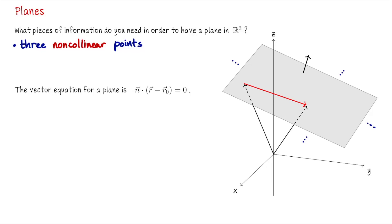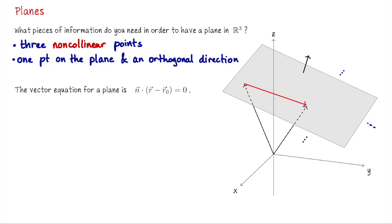The set of information that's going to be most important in this lecture is one point on the plane — a known point — and an orthogonal direction. That's somewhat similar to our viewpoint of lines in the previous lecture where we had a point on the line and a direction vector. Here we want a point on the plane and an orthogonal vector. There are other ways you could specify a plane; for example, if you have two intersecting lines, they determine a plane.